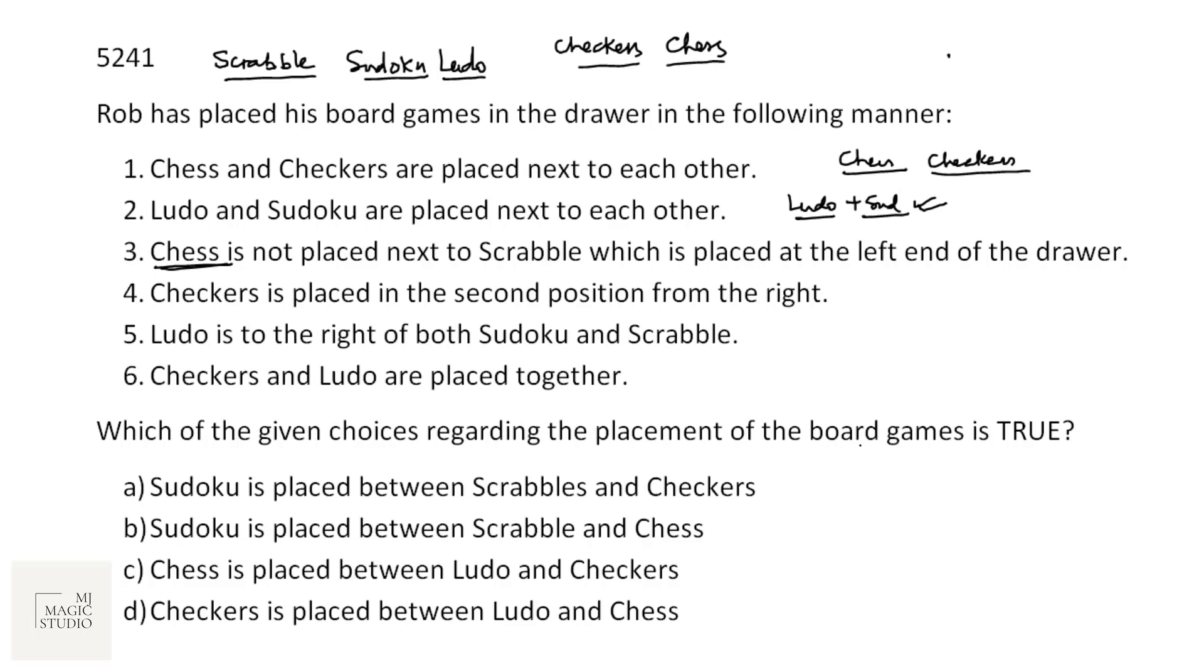Which of the given choices regarding the placement of board games is true? Sudoku is placed between Scrabble and Ludo. This is Scrabble, checkers. Sudoku is placed between Scrabble and chess. Wrong, because it is between Scrabble and Ludo. Chess is placed between? No, chess is at one of the corner. It cannot be between. That means obviously option D is correct. Checkers is between Ludo and chess. Option D is the correct pick.